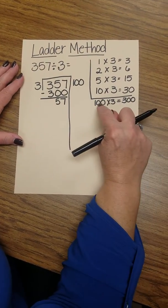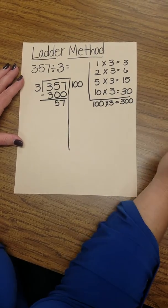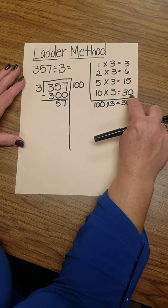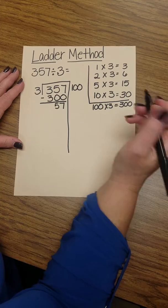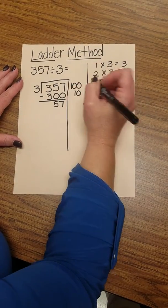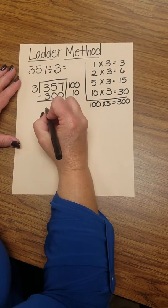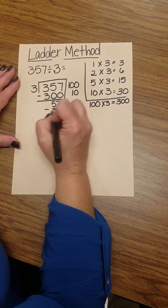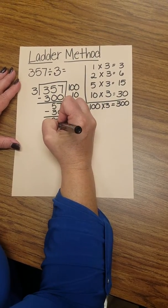So I can't use 100 again. I look to the next largest tool, which is 10, and 10 times 3 gives me 30. So I'm going to use 10. 10 times 3, and that leaves me 27.